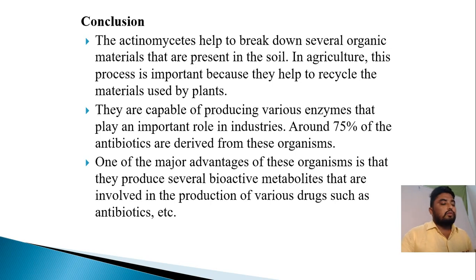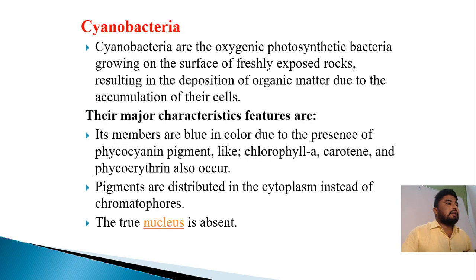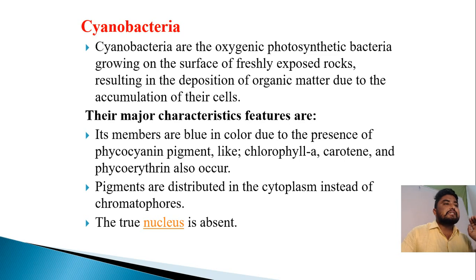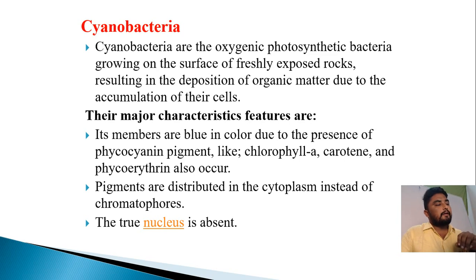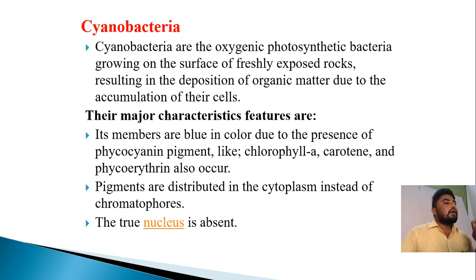Next is cyanobacteria. Cyanobacteria are oxygenic photosynthetic bacteria growing on the surface of freshly exposed rocks, resulting in the deposition of organic matter due to the accumulation of their cells. The major characteristics of cyanobacteria: their membranes are blue in color due to the presence of phycocyanin pigment; chlorophyll-a, carotene, and phycoerythrin also occur.